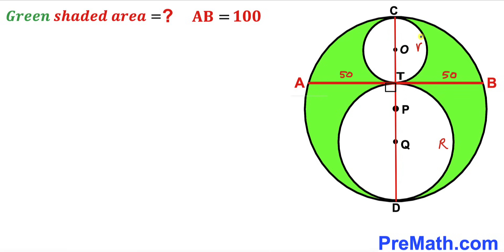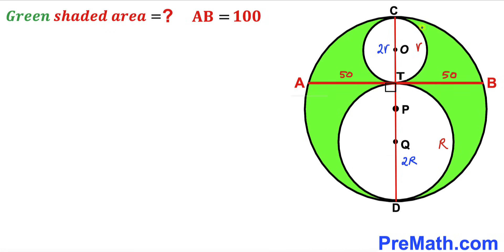The radius of the small circle is lowercase r, so its diameter CT equals 2r. The radius of the medium circle is uppercase R, so its diameter equals 2R. Therefore, the full diameter of the big circle is 2R plus 2r.